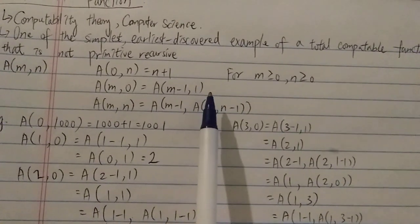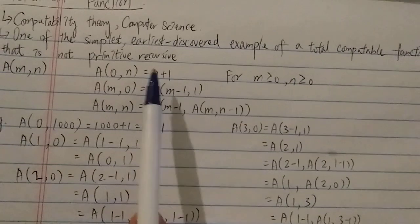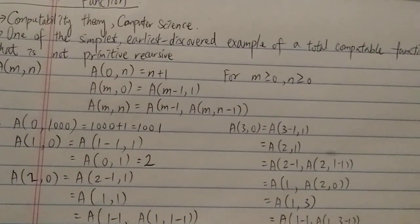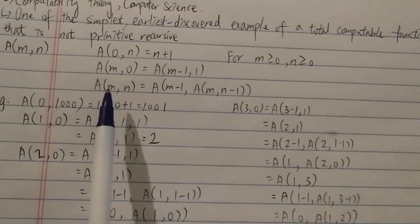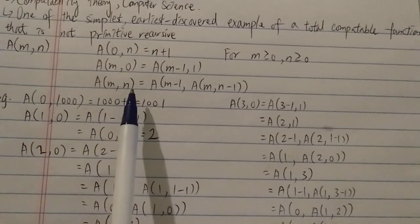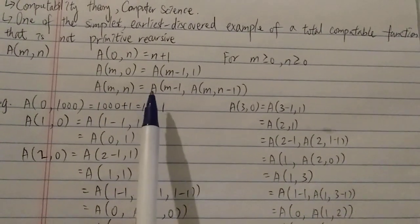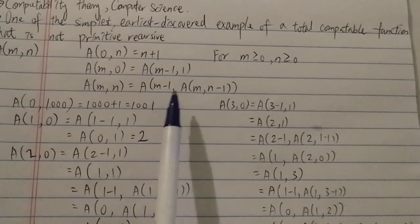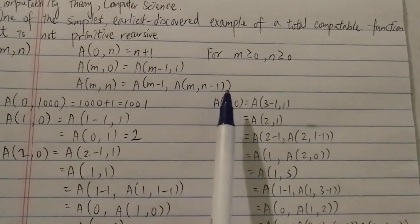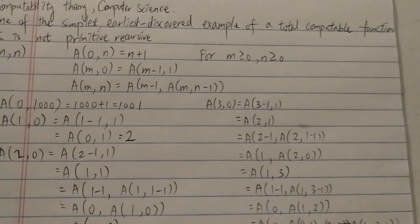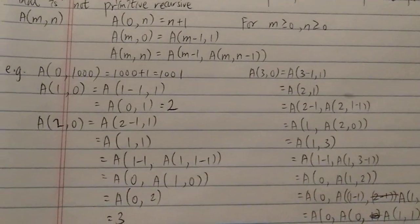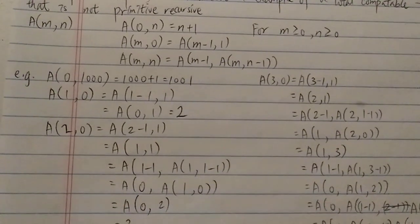That's already quite a big difference, as you'll see in a moment. The third case is A(M, N), which equals A(M minus one, A(M, N minus one)). So it starts to get very complicated at the third case.